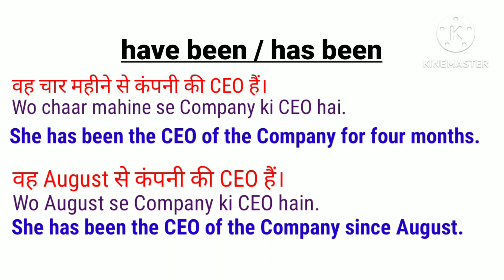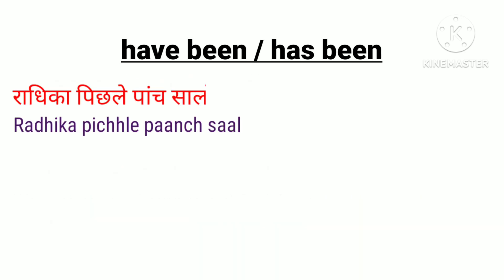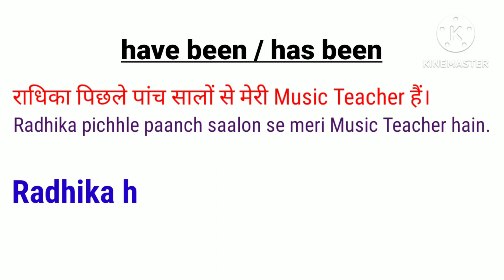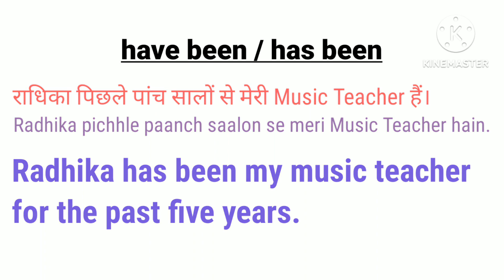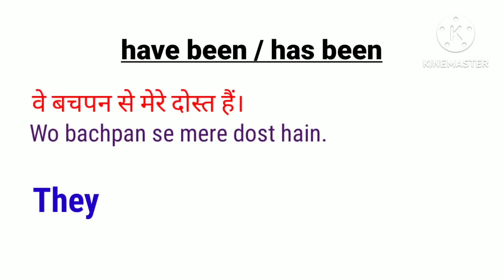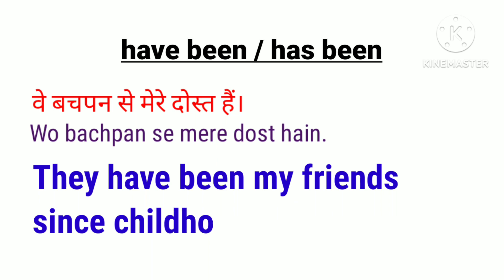August ایک point of time ہے اس لئے since use کر رہے ہیں، اور four months ایک period ہے اس لئے for use کریں گے۔ Radhika پچھلے پانچ سالوں سے میری music teacher ہے: 'Radhika has been my music teacher for the past five years' — again for، کیونکہ five years ایک period ہے۔ وہ بچپن سے میرے دوست ہیں: 'They have been my friend since childhood' — بچپن point of time ہے۔